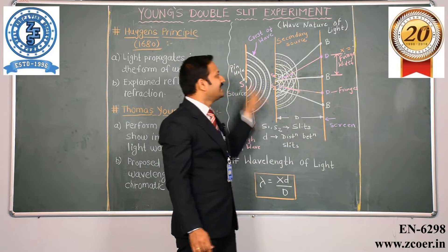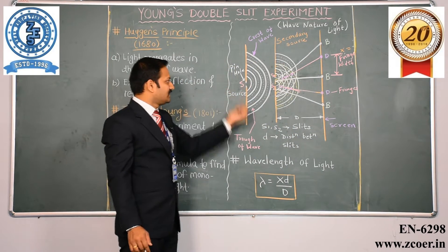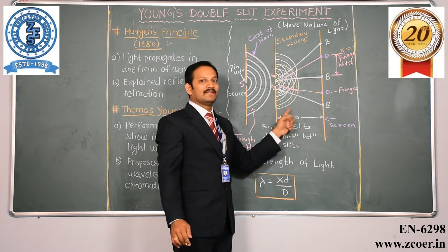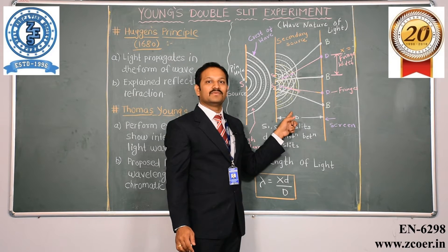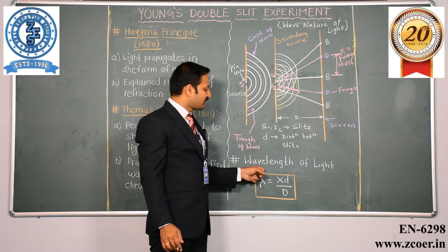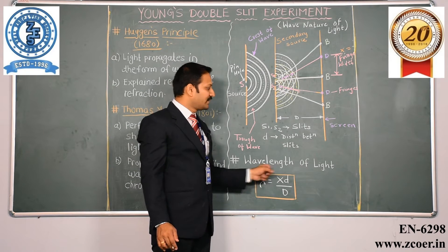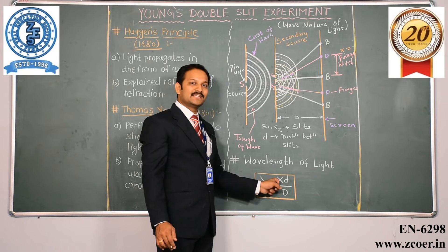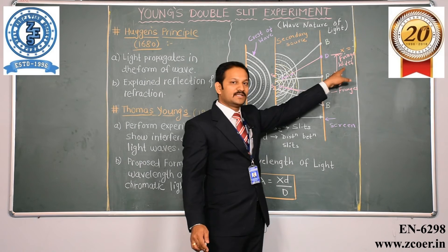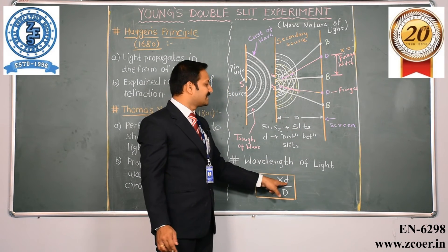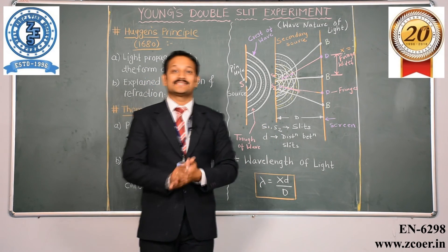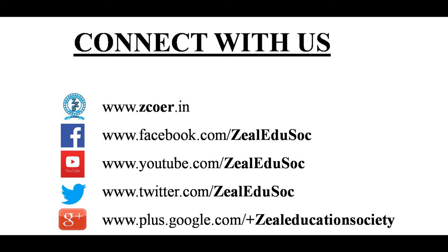This is what he observed when he considered one primary source, secondary source, and screen, and made sure that the two waves interfere with each other. He again found out the formula to find lambda — that is the wavelength of light. It is equal to x times d upon capital D, where x is nothing but the fringe width, d is the distance between two slits, and capital D is the distance between the secondary source and the screen. To be continued.